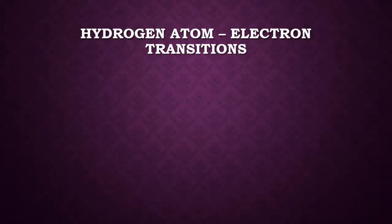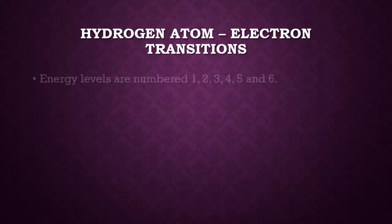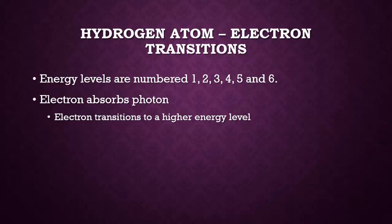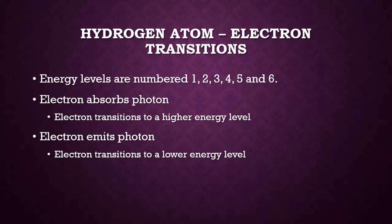Let's talk about electron transitions in the hydrogen atom. In the hydrogen atom, energy levels are numbered 1, 2, 3, 4, 5, and 6. When an electron absorbs a photon, the electron transitions to a higher energy level. When it emits a photon, it transitions to a lower energy level.